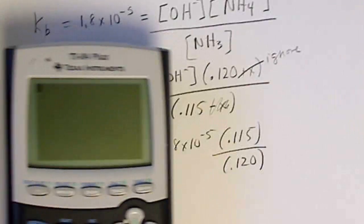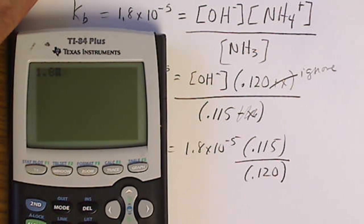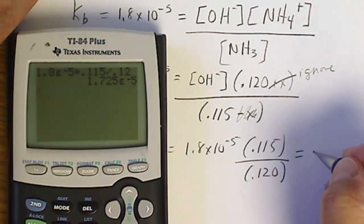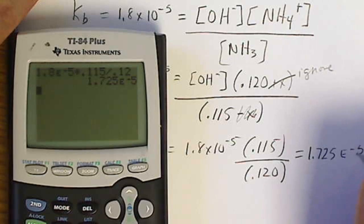So for this, 1.8 times 10 to the minus 5th times 0.115 divided by 0.120. So this is equal to 1.725 times 10 to the minus 5th.